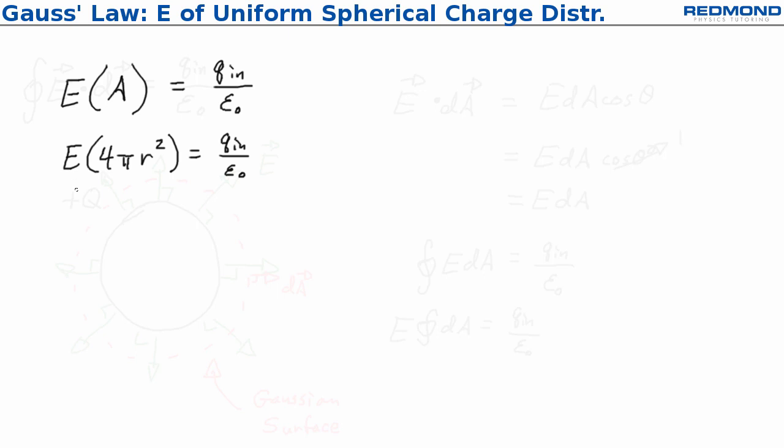Now the whole point of this was to solve for E, so I can isolate E, and I get E equals Q enclosed over 4 pi r squared times epsilon naught.